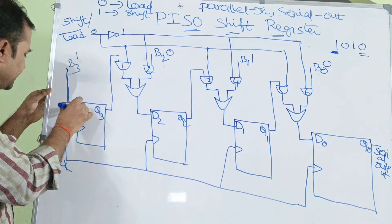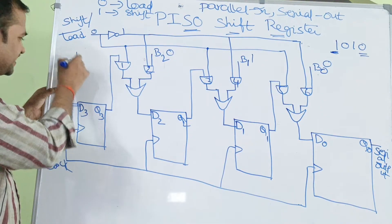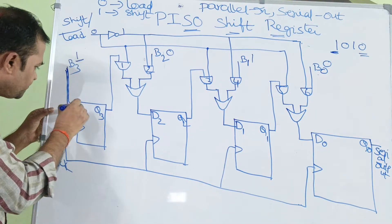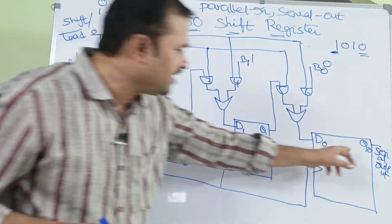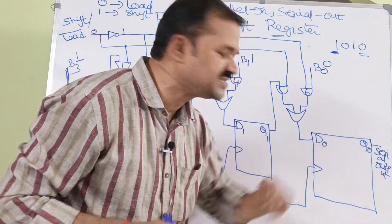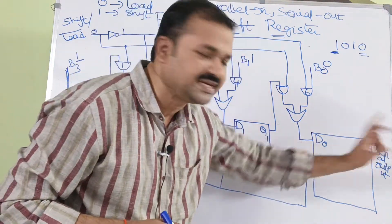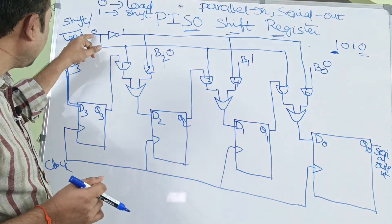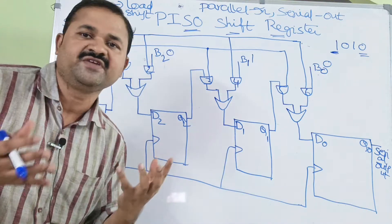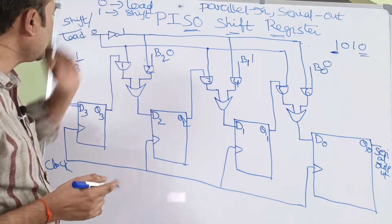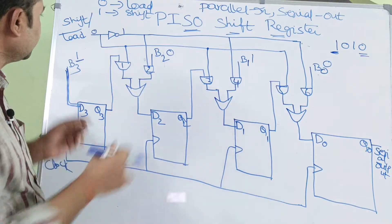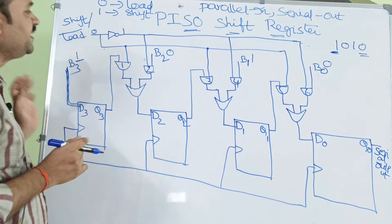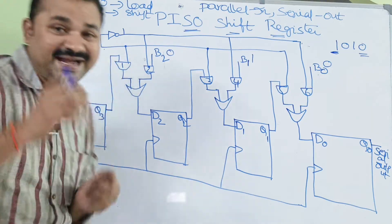The first input to the OR gate is B3, which is directly passed as input to the first flip-flop. Q0 is the serial output. If the input is 0, we perform load operation. So 0 complement means 1 — the top line is 1, the bottom line is 0. Here we have two AND gates feeding each OR gate.